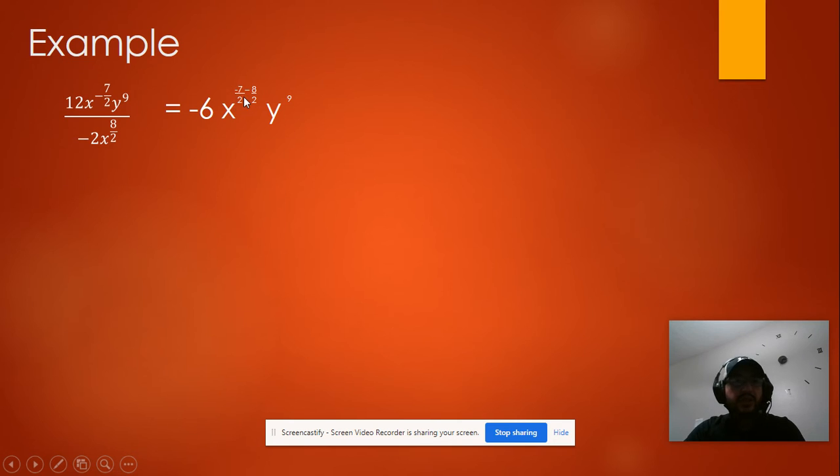Now we're going to do this subtraction. So negative 6 x to the negative 15 over 2 times y to the 9 power.